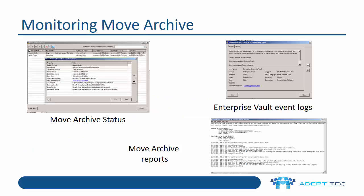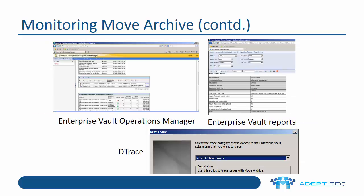There are a number of different ways of monitoring the move archive process. We have the move archive status window, which shows which stage each archive has reached. We have the Enterprise Vault event logs, which also show the different stages. Move archive reports are very useful for seeing detailed logs of each move. Move archive status is also reported to Enterprise Operations Manager and Enterprise Vault reports if they are configured. Finally, if you want to troubleshoot issues with move archive, you can use the dtrace log as well.